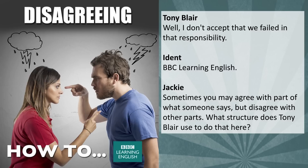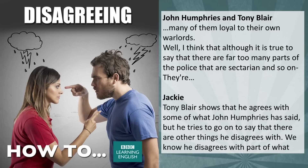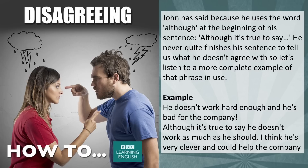Sometimes you may agree with part of what someone says but disagree with other parts. What structure does Tony Blair use to do that? 'Many of them loyal to their own warlords.' 'Well, I think that although it is true to say that there are far too many parts of the police that are sectarian and so on...' Tony Blair shows he agrees with some of what John Humphreys said, but uses the word 'although' to signal disagreement with the rest. Although he never quite finishes his sentence, let's listen to a more complete example: 'He doesn't work hard enough and he's bad for the company.' 'Although it's true to say he doesn't work as much as he should, I think he's very clever and could help the company a lot.'